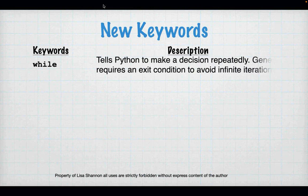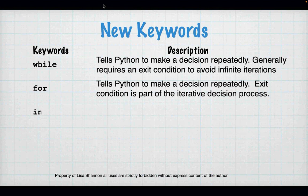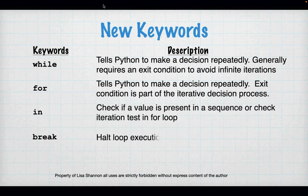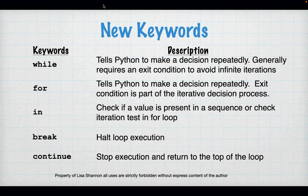We have some new keywords. There are two keywords for loops: while and for. While tells Python it's going to make a decision repeatedly, and for tells Python the same thing. The while loop requires a specific exit condition that you write and keep track of inside the loop. For also requires an exit condition, but the exit condition is part of the iterative decision process.